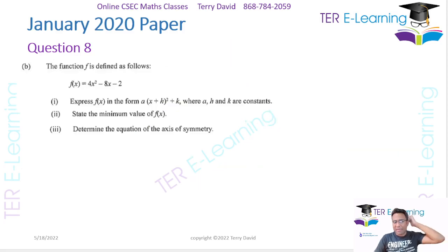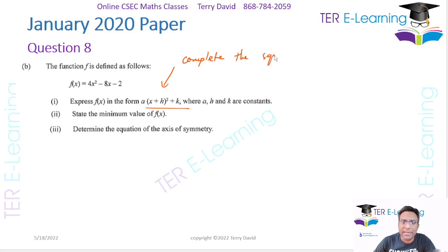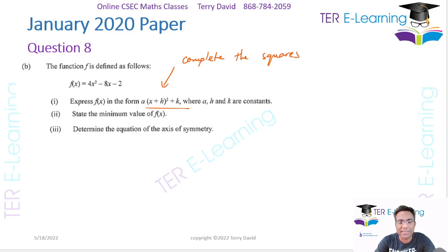So that's part A. Now in part B, they give us a function and they want us to write it in a specific format. Once you see this format, what they're really asking us to do is to complete the square. There are different ways that people complete the square, and CXC is not looking for any specific way — once you are able to write it in a format that is easy to work with.